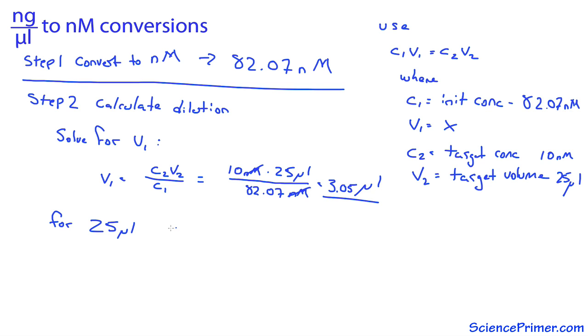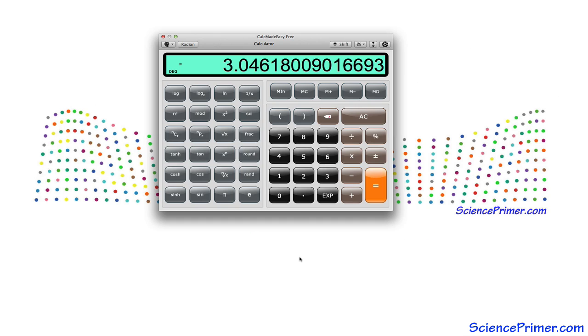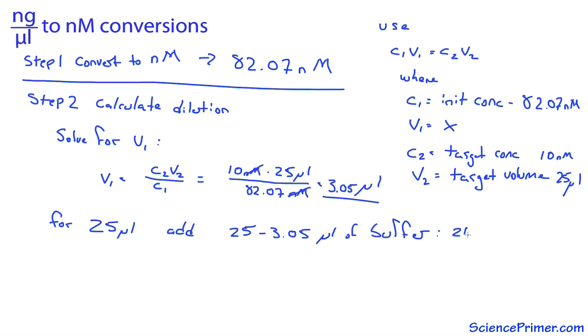This is the volume of the initial sample required to make 25 microliters of a 10 nanomolar solution. I get to the final volume of 25 microliters by adding buffer to the 3.05 microliters of sample. The amount of buffer needed is 25 minus 3.05. This equals 21.95 microliters. So this is the dilution needed.